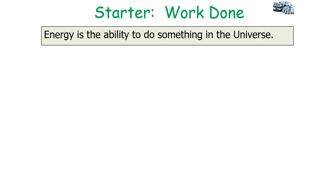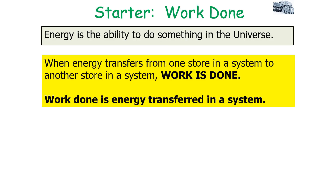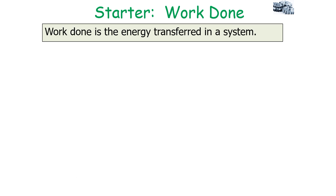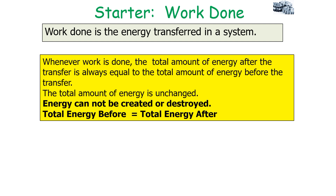Energy is the ability to do something in the universe. When energy transfers from one store in a system to another store, work is done. Work done is the energy transferred in a system — it refers to the transfer of energy from store to store without the explicit need for a wave. Whenever work is done, the total amount of energy before the transfer is always equal to the total amount of energy after the transfer, so the total amount of energy involved in an energy transfer is unchanged.